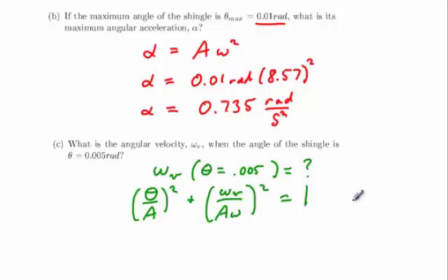Plugging in the values at hand, we find that one-half squared plus the quantity ωᵥ over amplitude times the ω frequency quantity squared equals one.